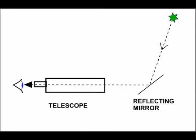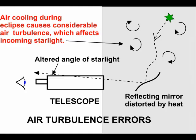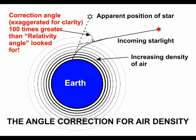Firstly, they used a mirror to reflect the light into a horizontal telescope. This introduced three times the error that direct use of a telescope gives. Secondly, the heat of the Sun on the mirror warps it and introduces further errors into the readings. Thirdly, as the cone of darkness crosses the Earth, it causes considerable turbulence in the atmosphere due to the change of temperature, which plays havoc with the stars' images. Finally, the starlight comes in at an angle, and the Earth's atmosphere bends the starlight, which has to be corrected — but this correction is 100 times the minute angle change that they were looking for.